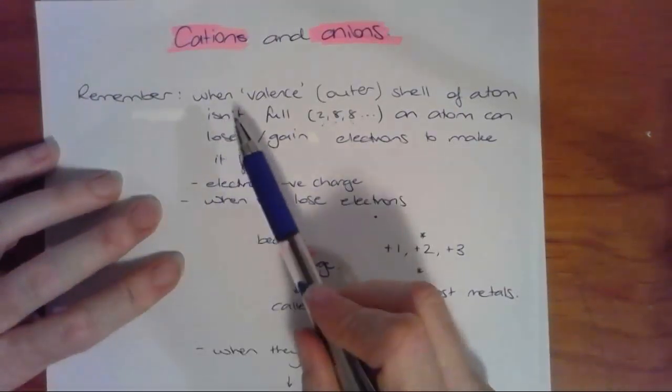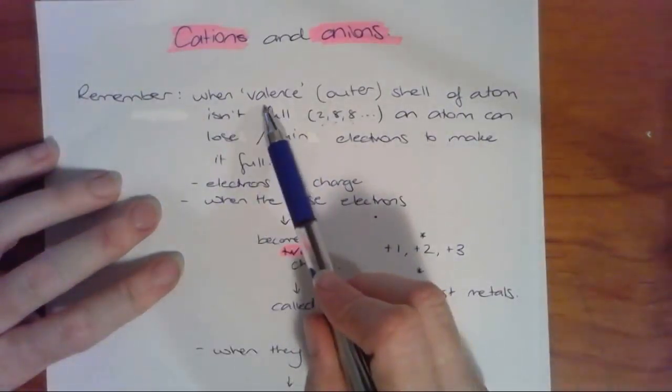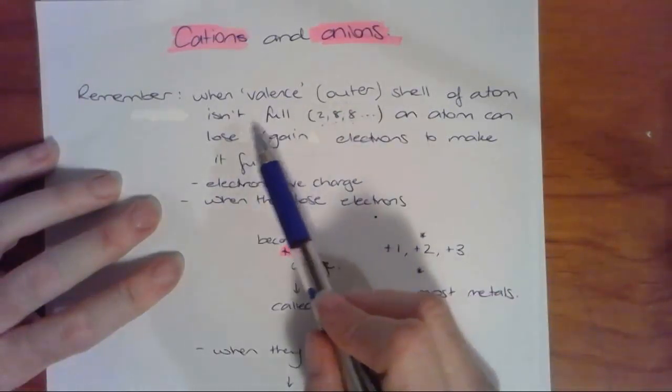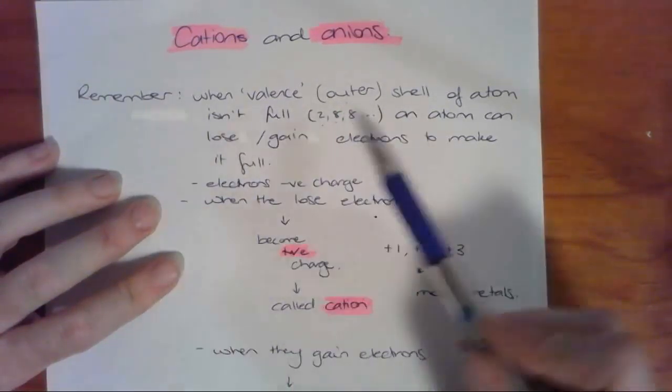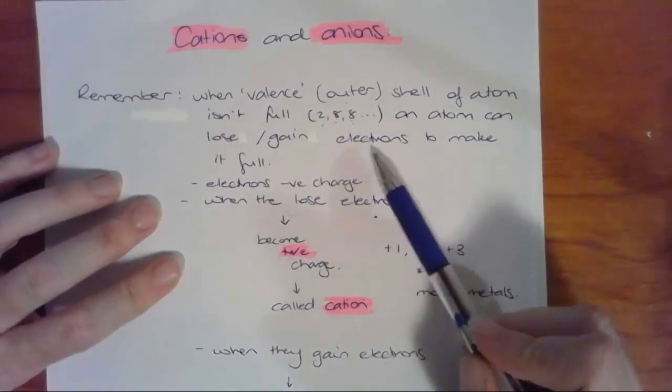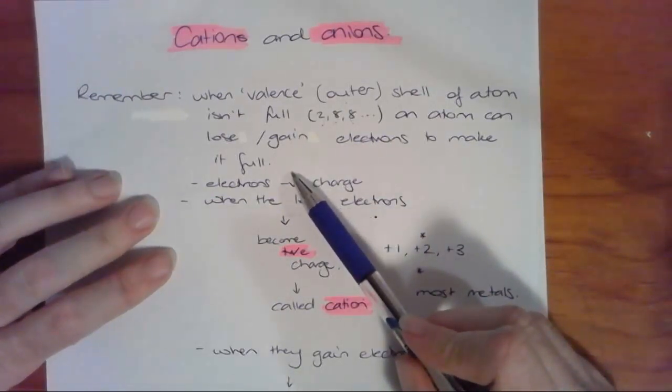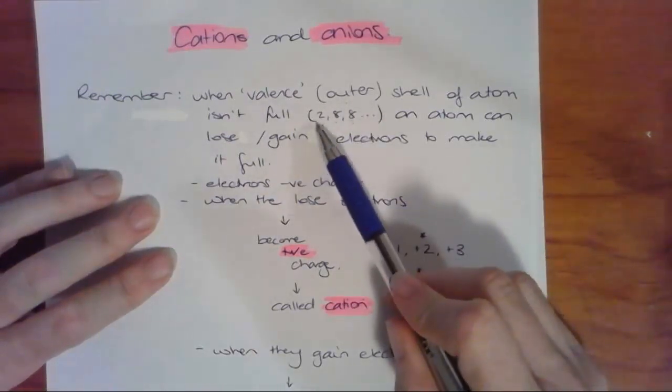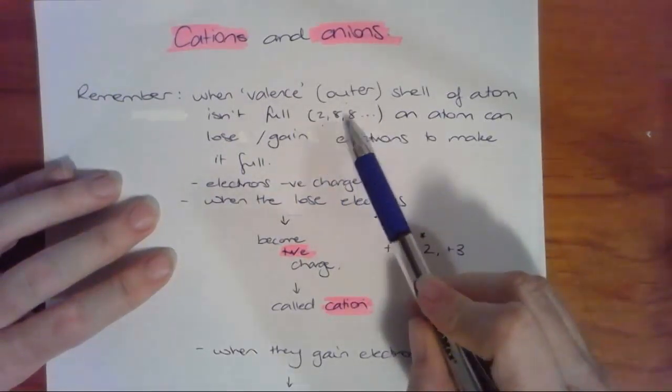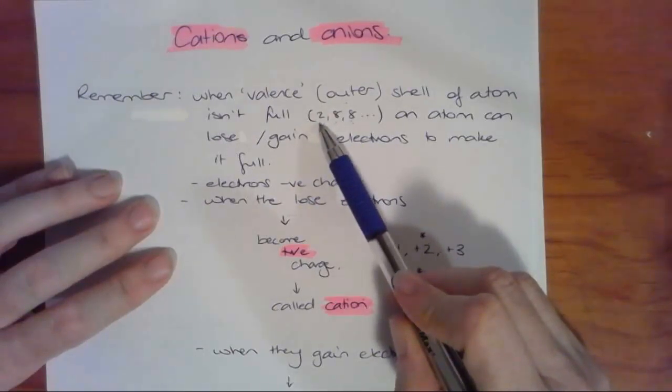When we have an atom's valence or outer shell of an atom, when it's not full, an atom can lose or gain electrons to make it full. And we know that atoms really like having a full outer shell.